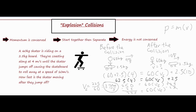Just to recap: set up your before-the-collision and after-the-collision columns, get your pictures with all numbers and variables written out, then slide those numbers directly into the momentum equals mass times velocity formula. Do a little bit of algebra and solve for your unknown variable. I hope that was helpful in understanding and calculating an explosion collision. Thank you for watching.